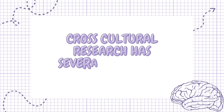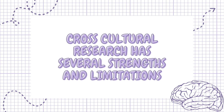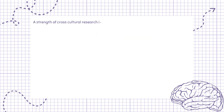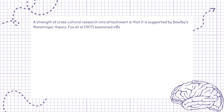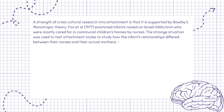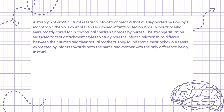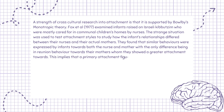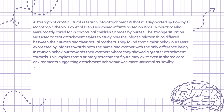Cross-cultural research has several strengths and limitations. A strength of cross-cultural research into attachment is that it is supported by Bowlby's monotropic theory. Fox et al. (1977) examined infants raised on Israeli Kibbutzim who were mostly cared for in communal children's homes by nurses. The strange situation was used to test attachment styles to study how infants' relationships differed between their nurses and their actual mothers. They found that similar behaviors were expressed by infants towards both the nurse and mother, with the only difference being in reunion behavior towards their mothers, whom they showed a greater attachment towards. This implies that a primary attachment figure may exist even in shared care environments, suggesting attachment behavior was more universal as Bowlby proposed.